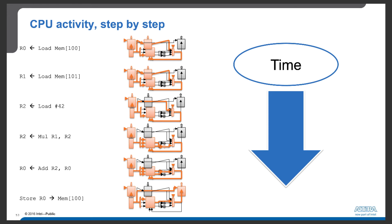The third instruction is load constant. In this case, the value 42 encoded in the instruction is passed through the ALU and loaded into the register file at register R2. During this step, the load unit and the store unit are both idle.